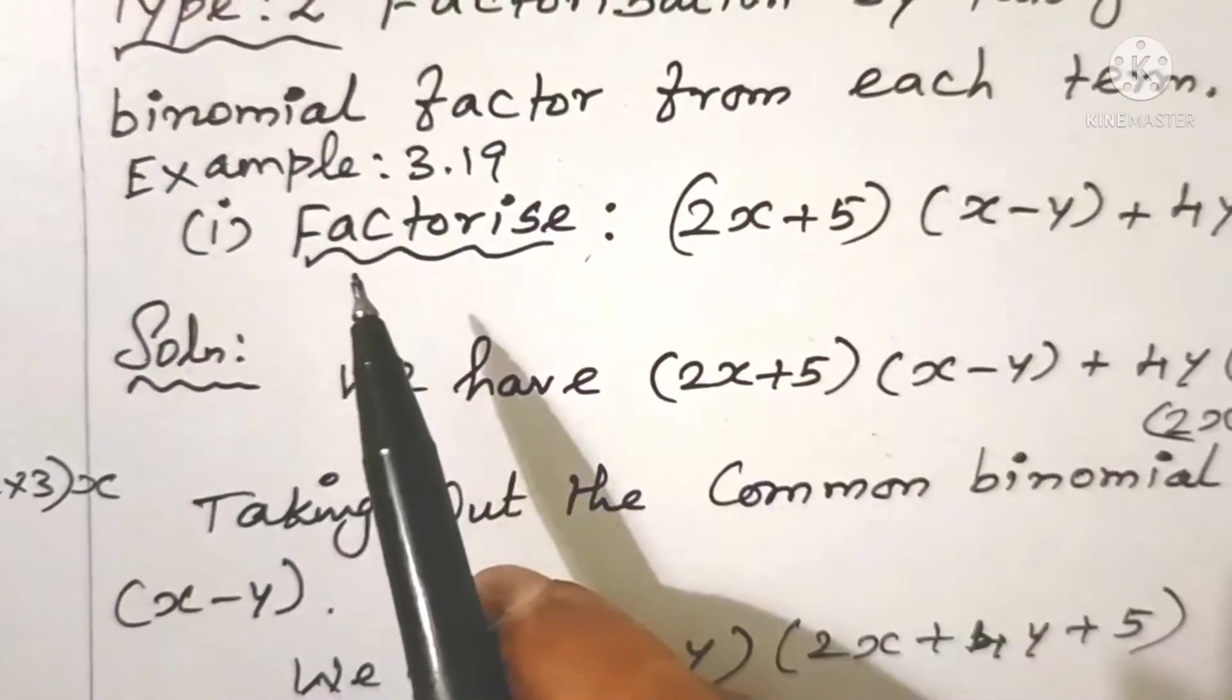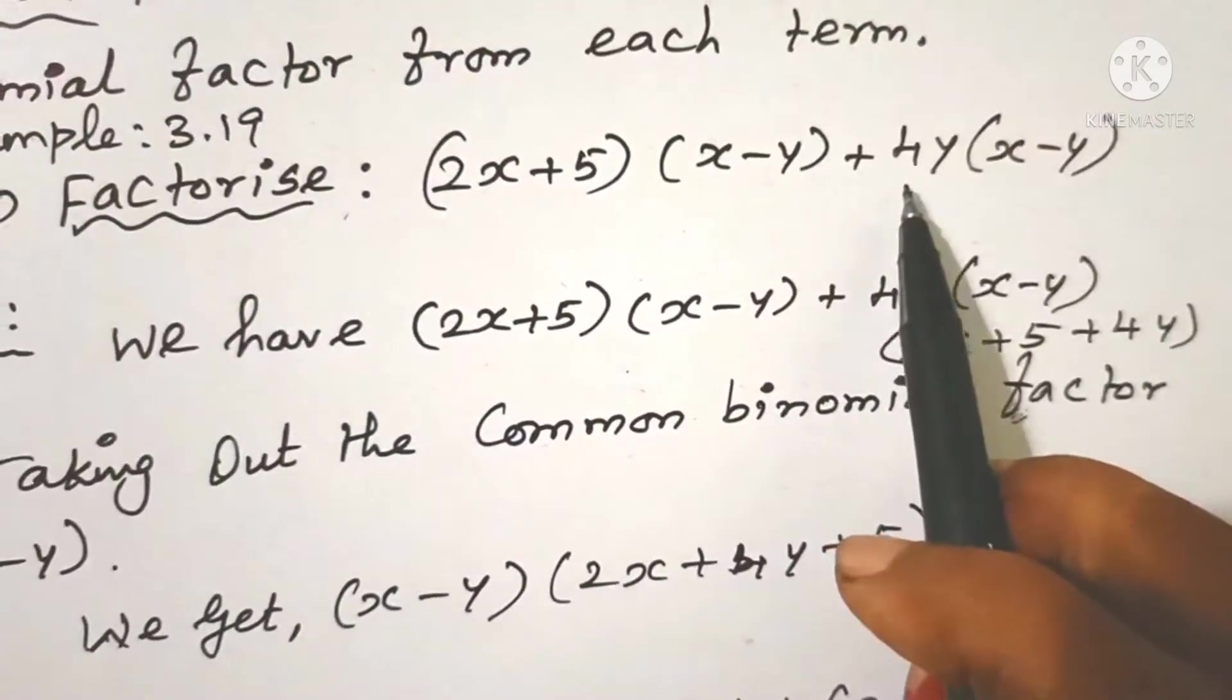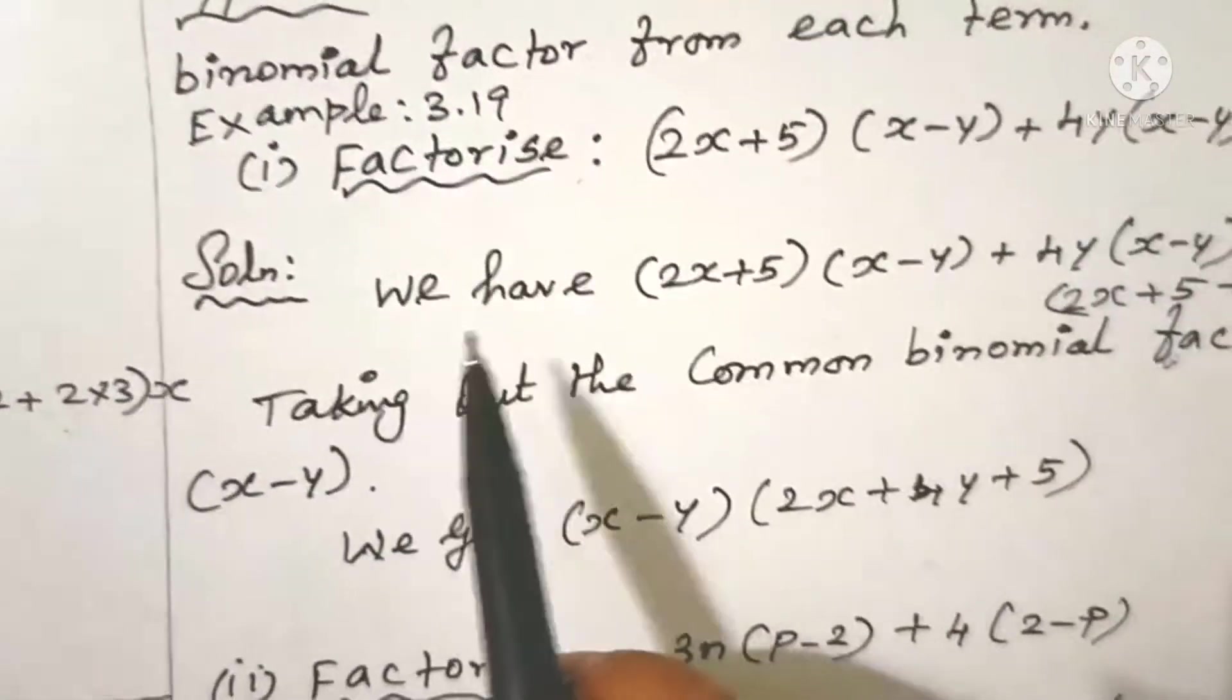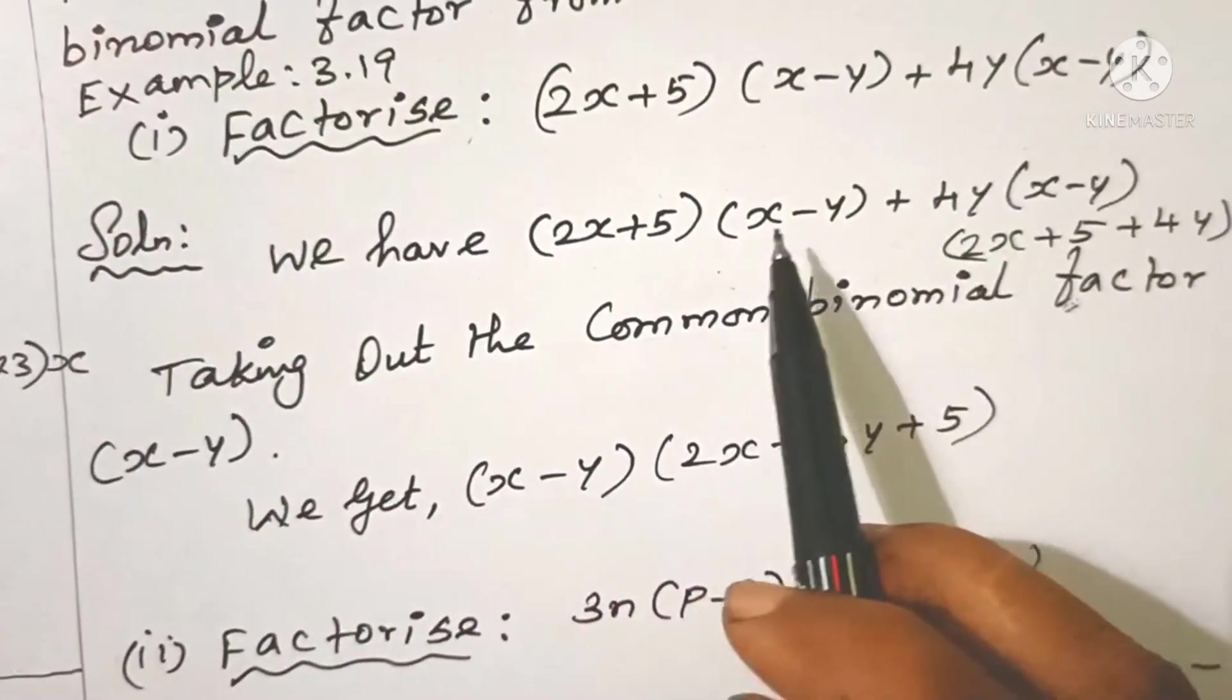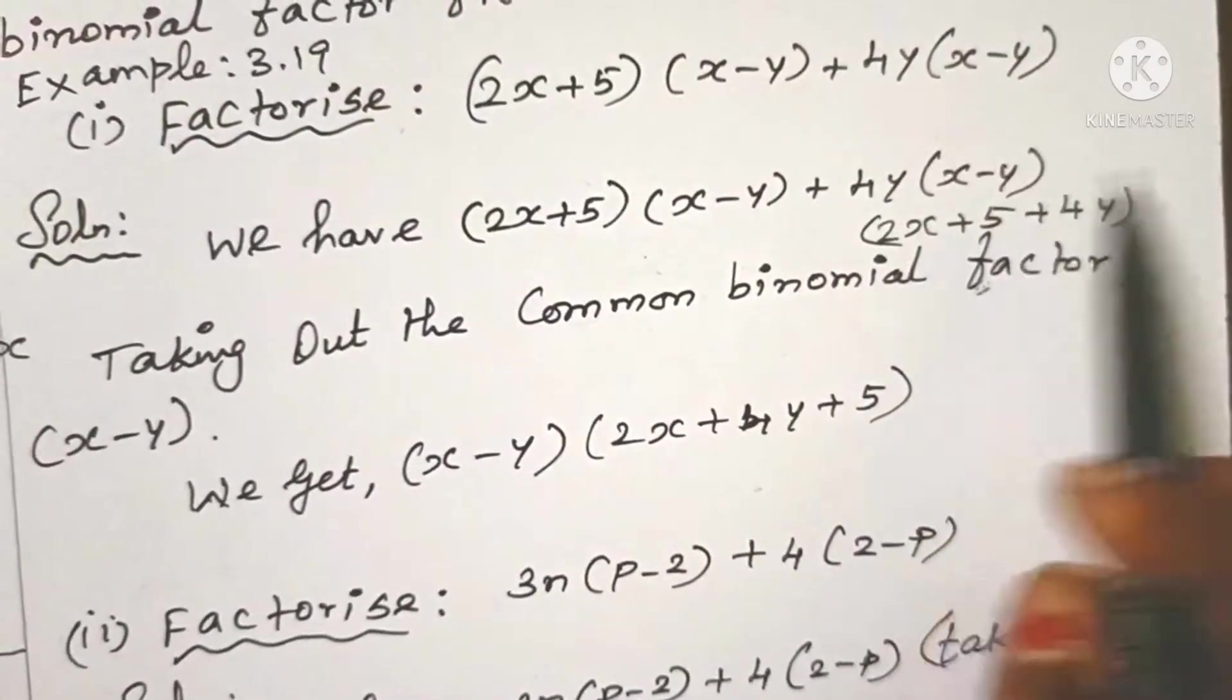So first one is factorize (2x + 5)(x - y) + 4y(x - y). Solution: We have (2x + 5)(x - y) + 4y(x - y).